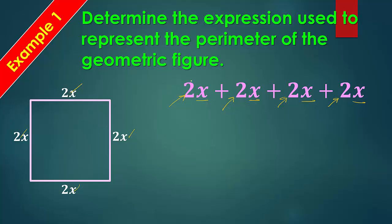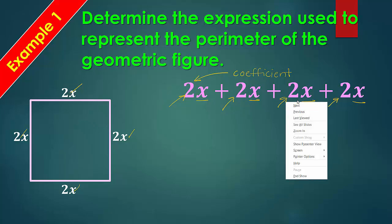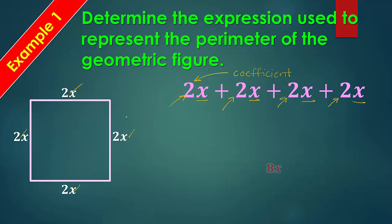Now, they all have an x. So they are all like terms. So what we're going to do is we're going to add this number that's in front for each one. This number in front, that's called the coefficient. So if you ever hear coefficient, that is the number in front of the variable. So all we do is do 2 plus 2 plus 2 plus 2, which is 8x, and that's as simplified as you can get it. So that's your answer.